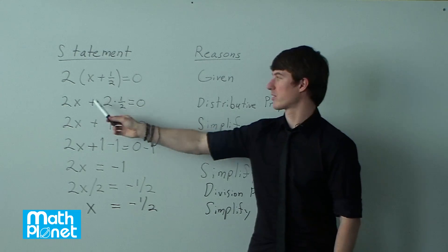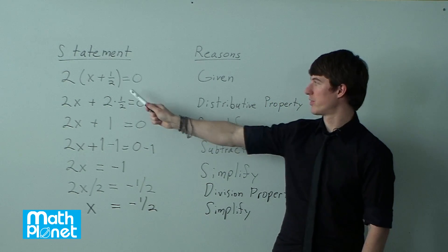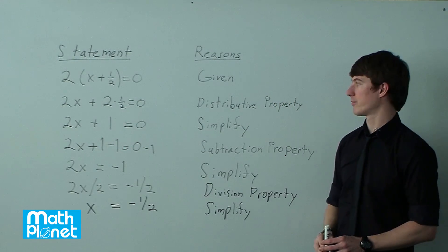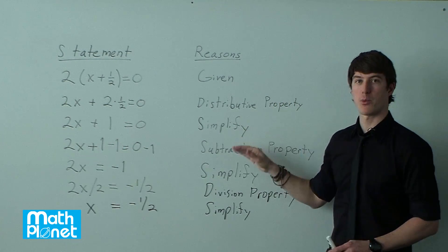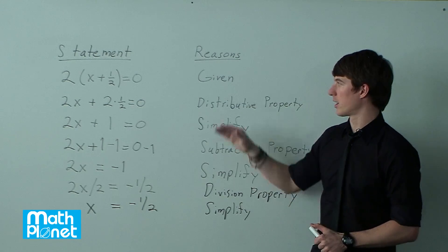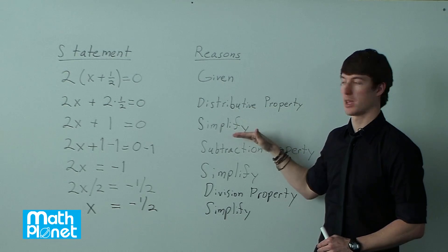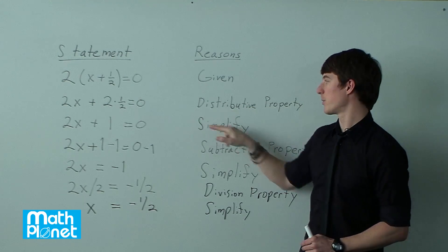So the distributive property says we multiply through by 2. So multiplying this quantity by 2 gives us 2 times x and 2 times 1/2. That's the distributive property. Now when you do any algebraic equation that you're solving for x, at each point after you do something you need to simplify. So we've done the distributive property. Then we need to simplify.